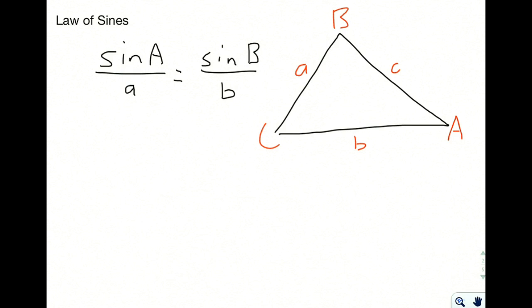Now, what it says with the Law of Sines is that for any triangle, if you take the sine of one of the angles over its opposite side, so sine of the angle over its opposite side,